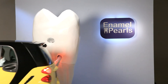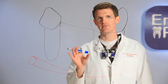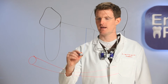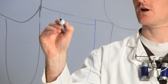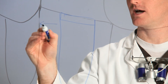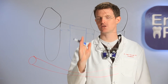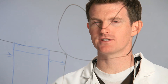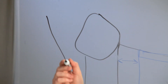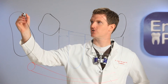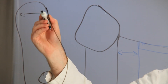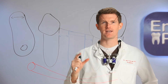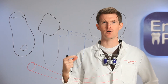The mesiodistal space determines our implant diameter. A healthy implant needs at least 1.5 to 2 millimeters of bone between it and the neighboring tooth. So we need 2 millimeters of space between the edge of the implant and the edge of the tooth. Choosing our implant diameter also depends on our ridge width. Our implant needs to be 2 millimeters less in diameter than our ridge width to have that healthy 1 to 2 millimeters of bone surrounding the implant.